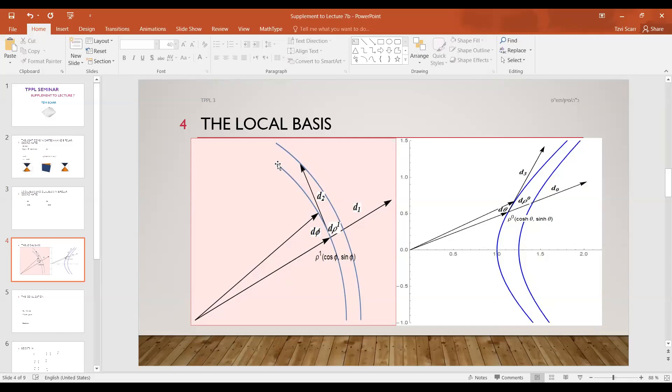Now the local basis—the vector basis, not the dual basis—local basis looks like this. Let's start with the left hand picture. Blue lines are lines of constant rho one, and I'm looking at this point right here, which I call rho one cosine phi, sine phi. If you have a small change in rho one, it's in this direction, and so a unit vector in this direction is called d1. And if you change phi, this represents a change in phi, and so the basis vector has to be tangent to the circle, and this is d2.